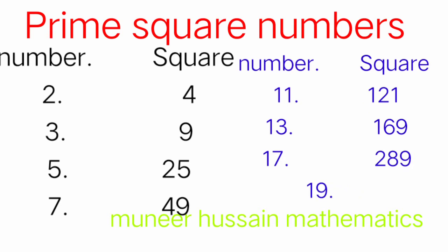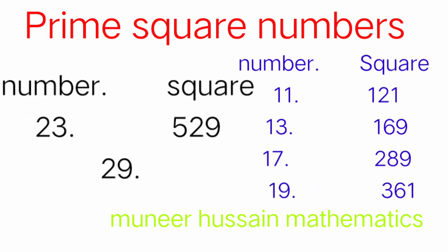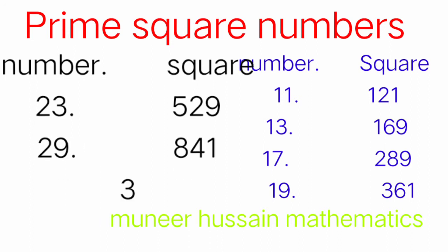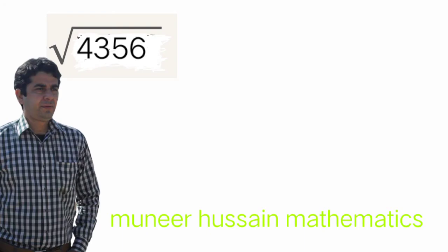Continuing: square of 19 is 361, square of 23 is 529, square of 29 is 841, and square of 31 is 961, and so many like these. Now we shall start the first question: square root of 4356.